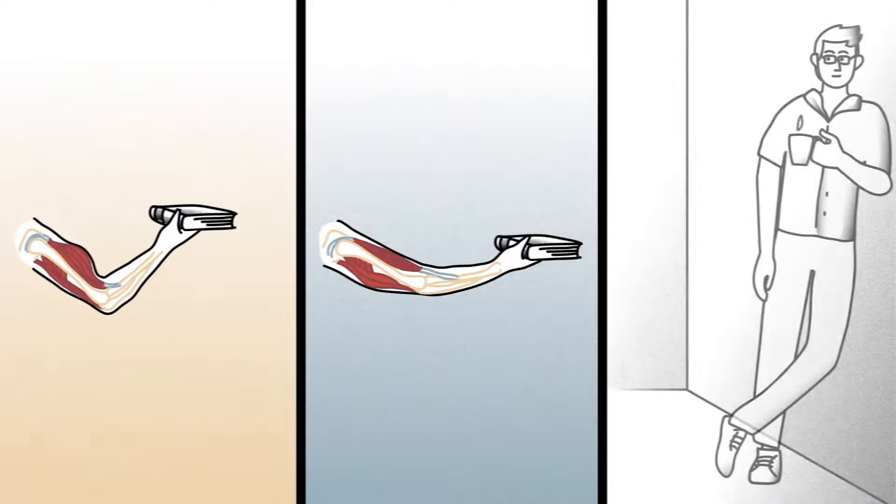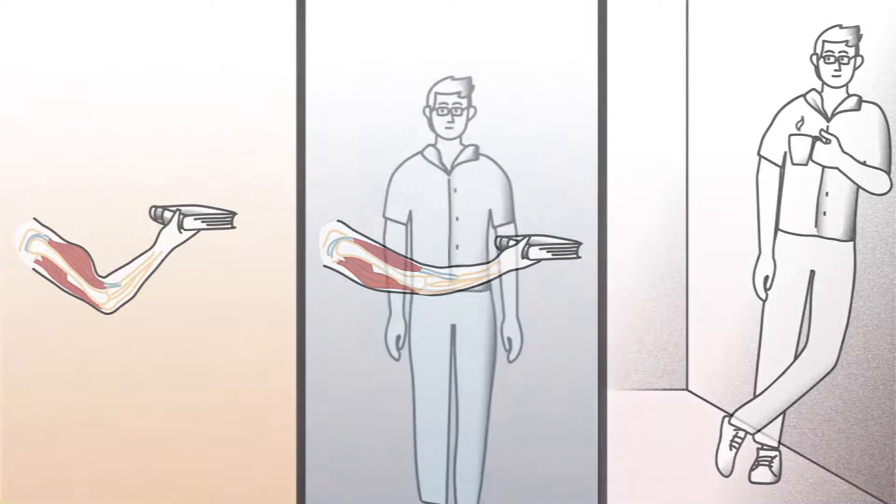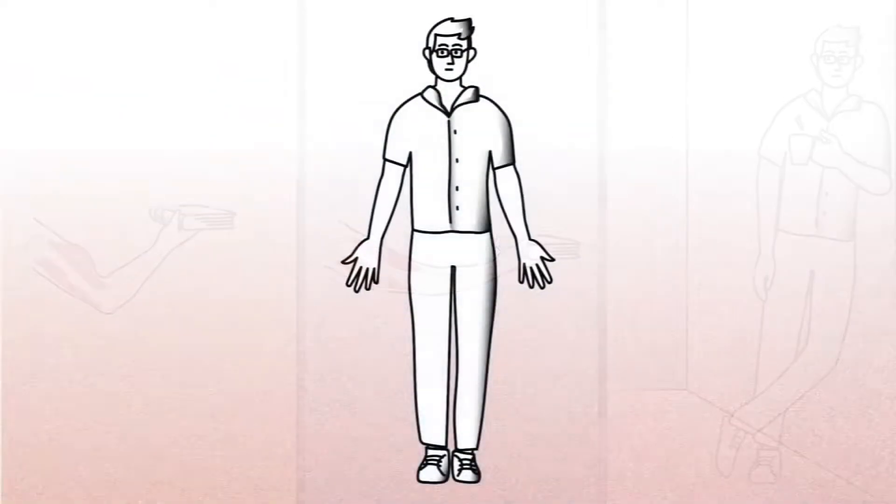The third type of contraction creates a stabilizing force. In these cases, the muscle fibers don't change in length, but instead keep the muscles rigid. This allows us to grip a mug of coffee or lean against a wall. It also maintains our posture by holding us upright.